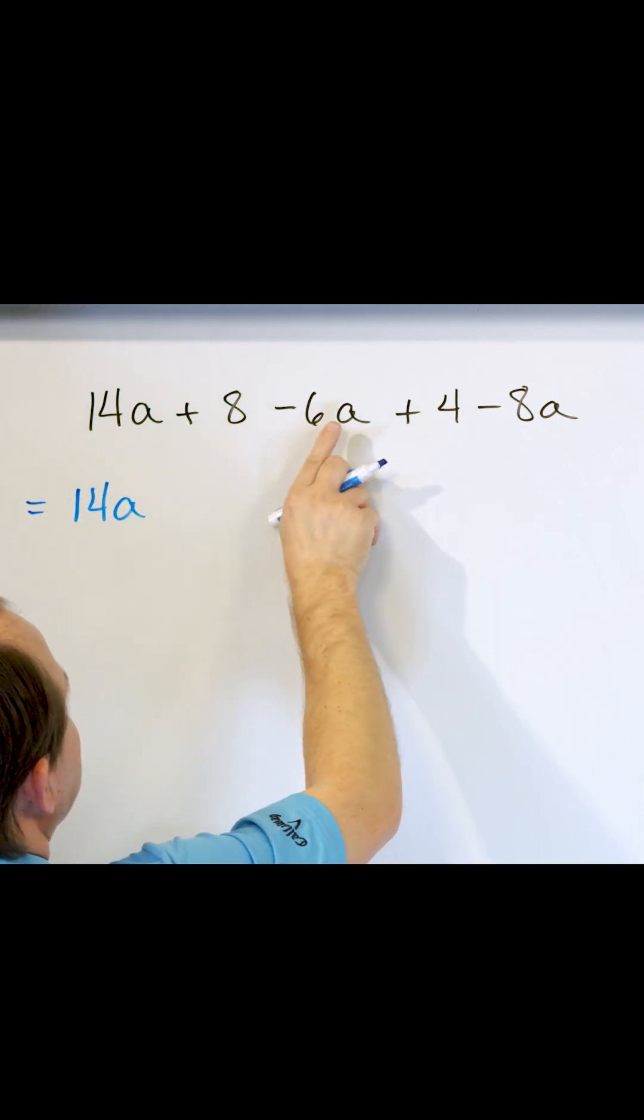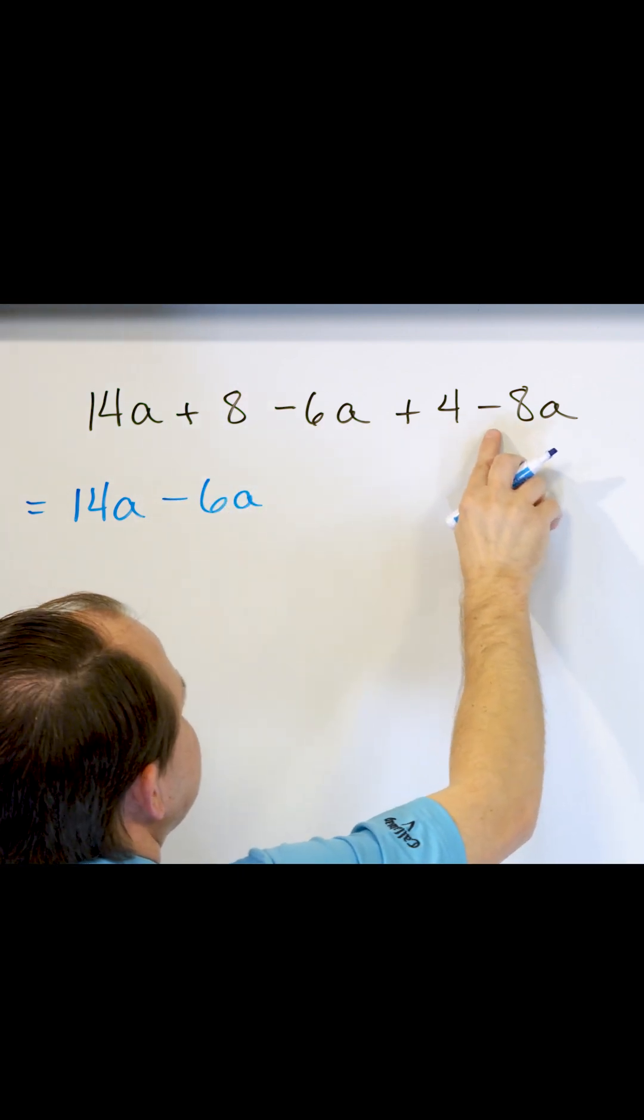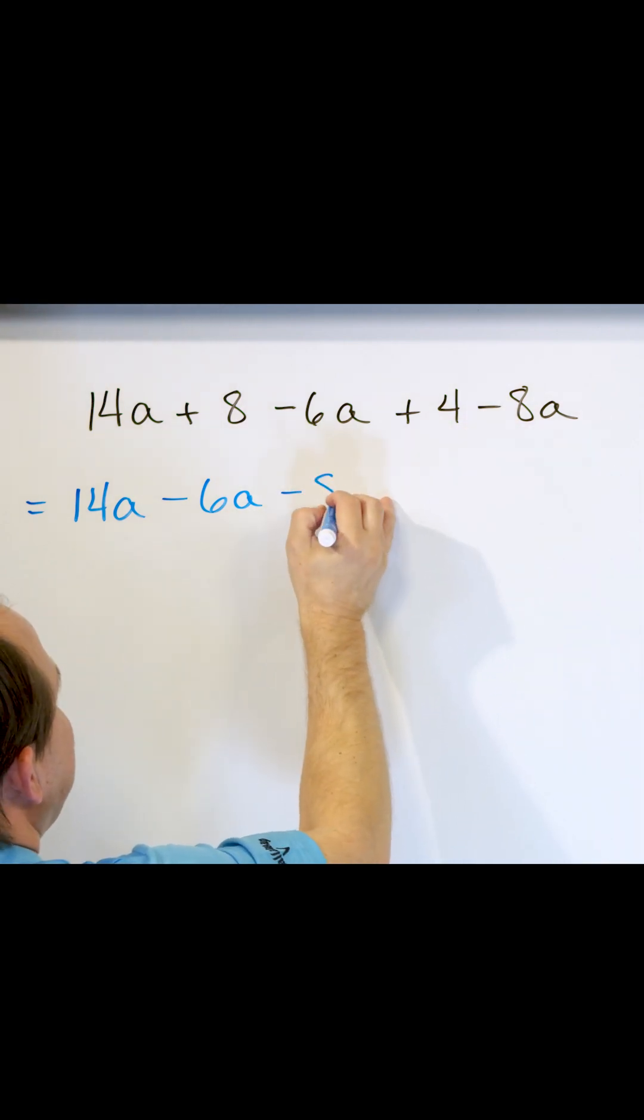Here is a like term. It has the same variable. The minus sign goes with it, so it's minus 6a. This is also a like term. The minus sign goes with it, minus 8a.